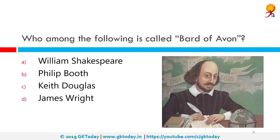Who among the following is called the Bard of Avon? The correct answer is William Shakespeare. William Shakespeare was an English poet, playwright, and actor widely regarded as the greatest writer in the English language and the world's greatest dramatist. He is often called England's national poet and the Bard of Avon.